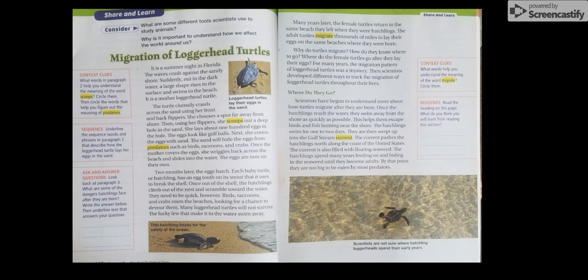She lays about 100 eggs in the hole. The eggs look like golf balls. Next, she covers the eggs with sand. The sand will hide their eggs from predators such as birds, raccoons, and crabs. Once the mother covers the eggs, she wriggles back across the beach and slides into the water. The eggs are now on their own.